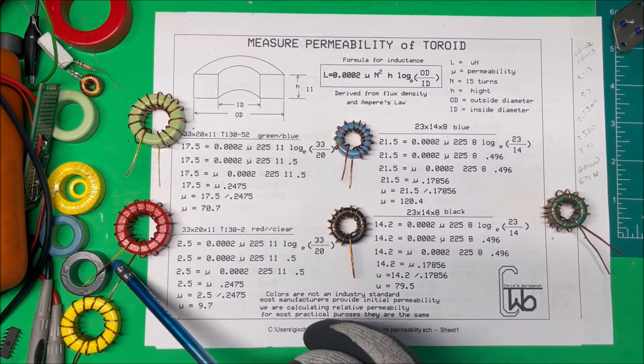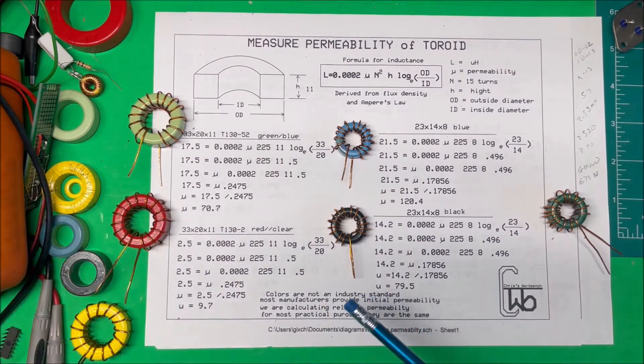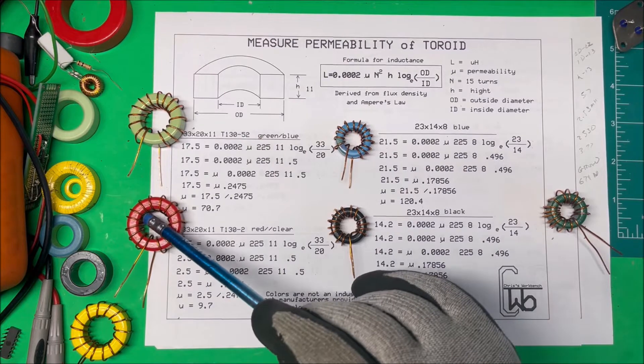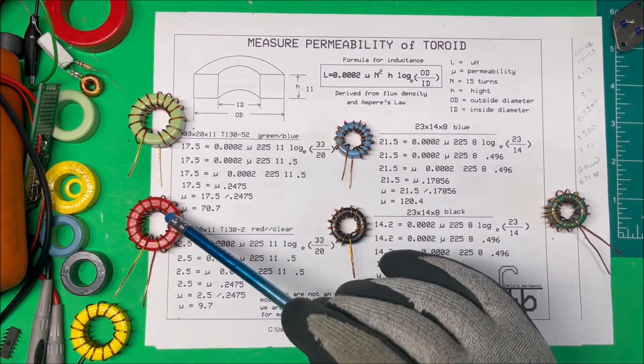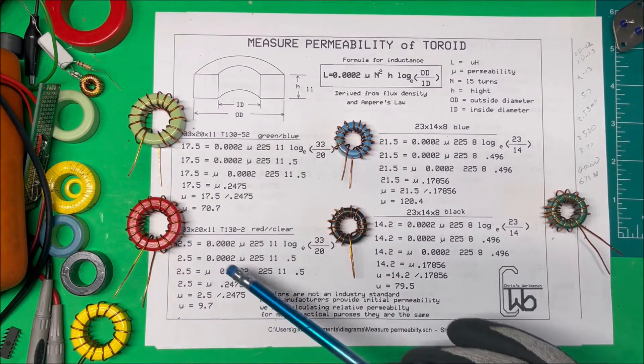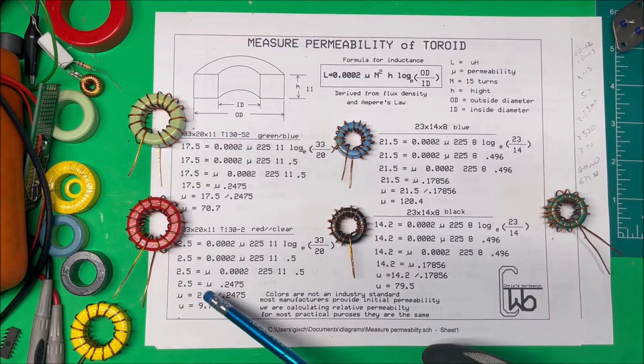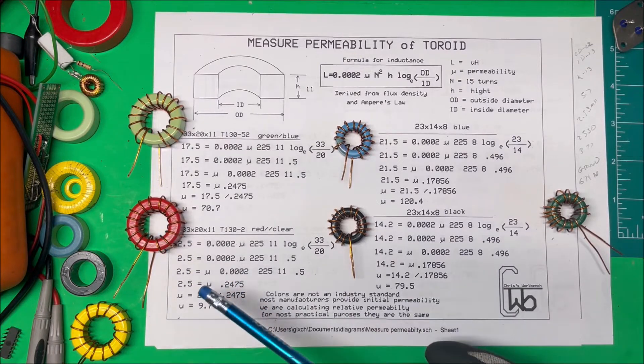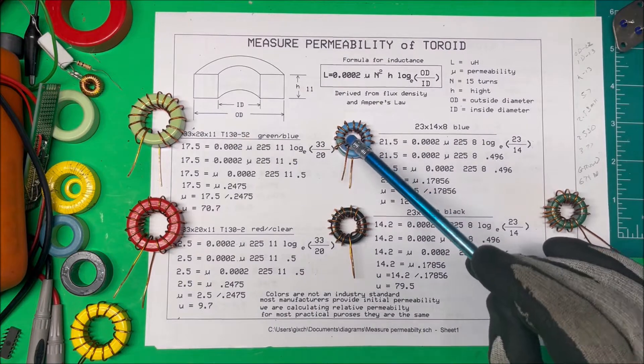So that works out good. This red one here, red-clear, it has an inductance of 2.5 micro-Henry's. All these numbers are the same because it's the same size coil, same amount of turns. If we divide that out, it comes out to 9.7, and in the datasheet says this has a permeability of 10. So that works out good.